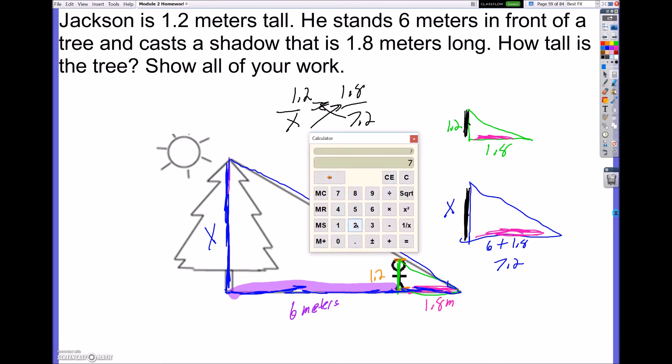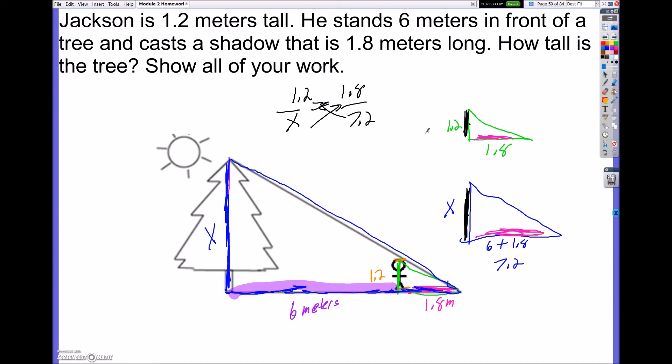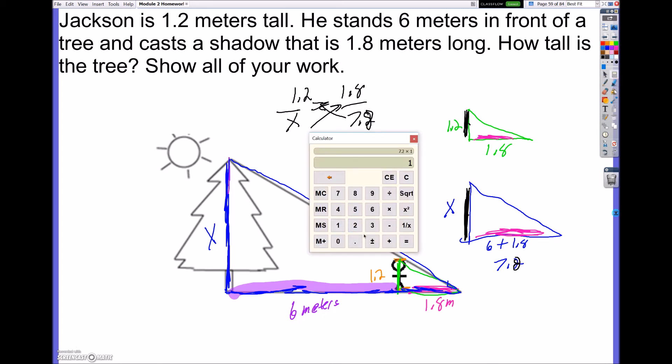So if I have 7.2 times 1.2. I made a mistake. Let me take one quick step back. This should be 7.8, which means this should be 7.8. So now when I take out my calculator, I'll have 7.8 times 1.2. That equals 9.36 is equal to 1.8 X. I'm then going to divide both sides by 1.8. Divided by 1.8, which will be the size of the tree, which is 5.2 meters tall.